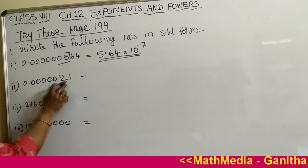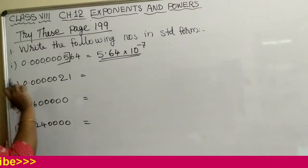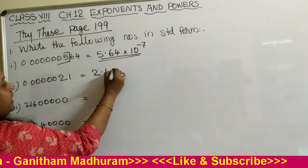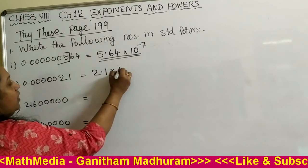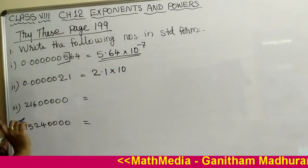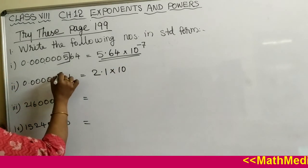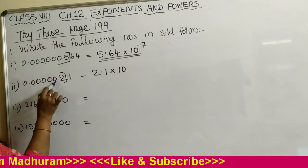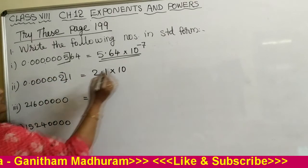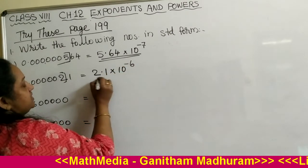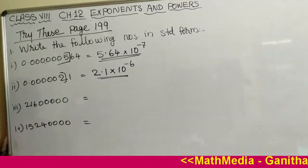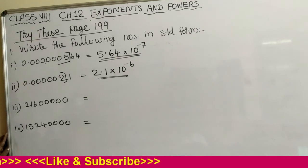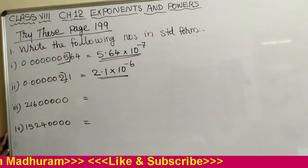Question number 2 is also a decimal number, so we take the first non-zero digit: 2.1. The power of 10 will be negative. Count the digits till the first non-zero digit: 1, 2, 3, 4, 5, 6 — so we write minus 6. The standard form is 2.11 into 10 raised to minus 6.